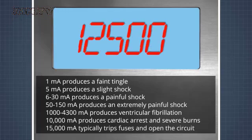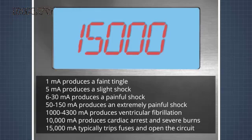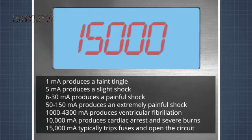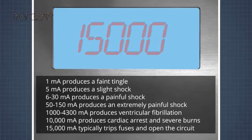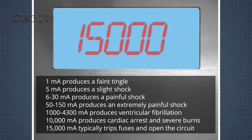Fifteen thousand milliamps or 15 amps is the lowest current that a typical fuse or circuit breaker will trip and open the circuit. In addition to the injuries listed above, loss of muscle control can cause falls or muscle spasms that produce further injuries, such as falling from a ladder or prolonging exposure to the electrical current.